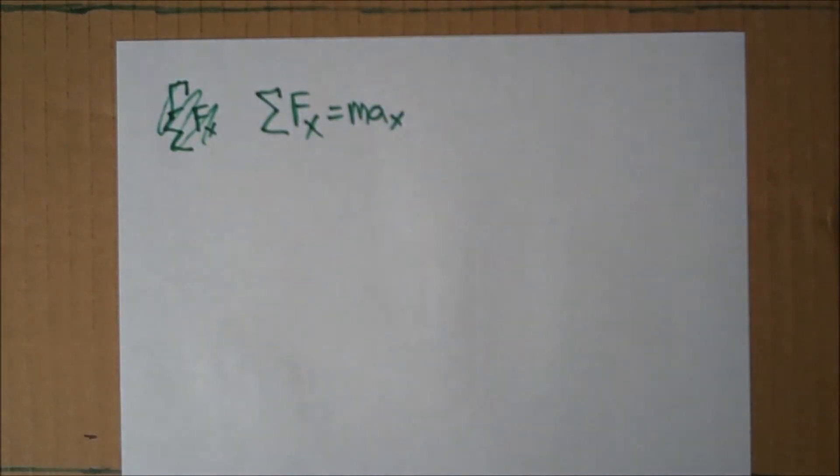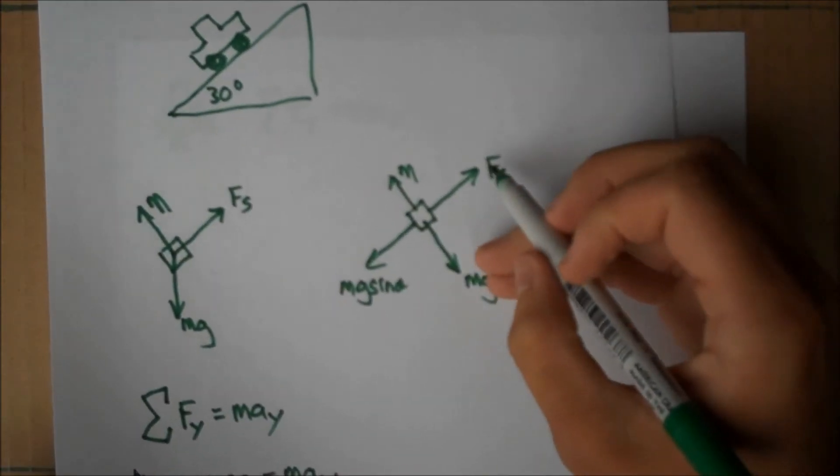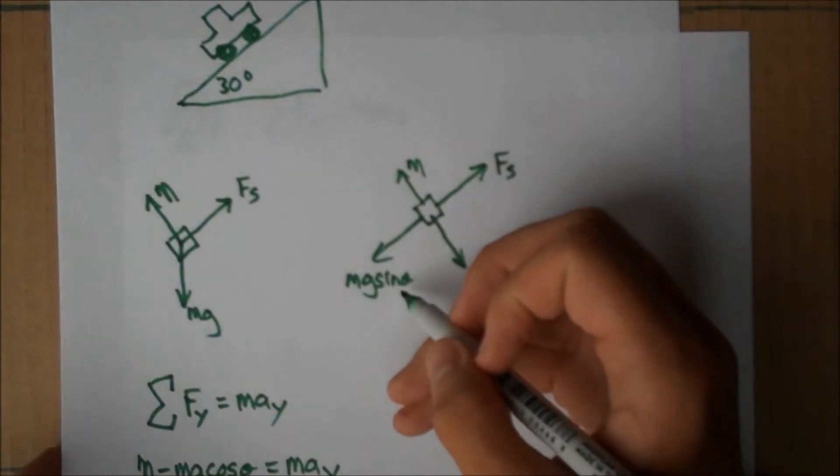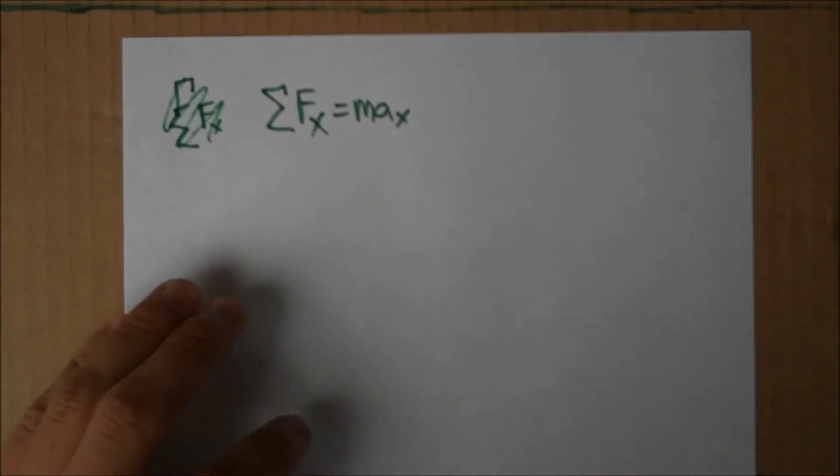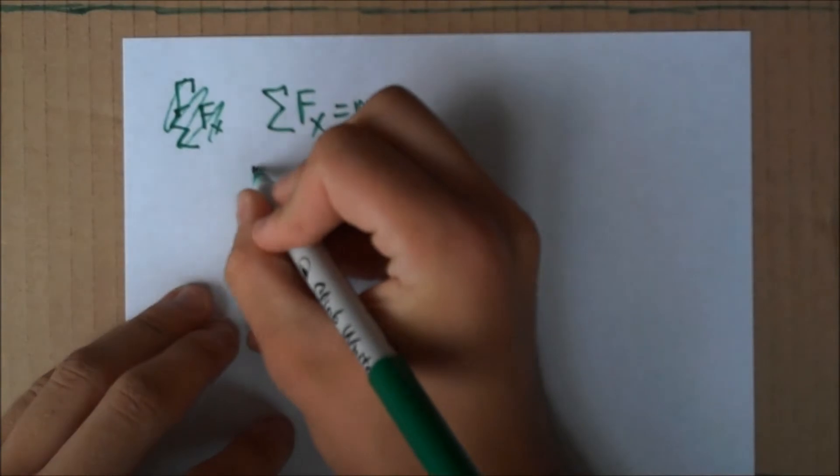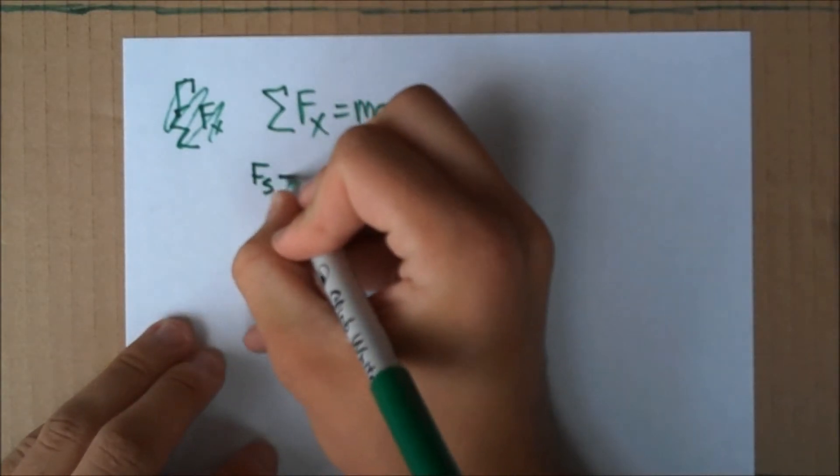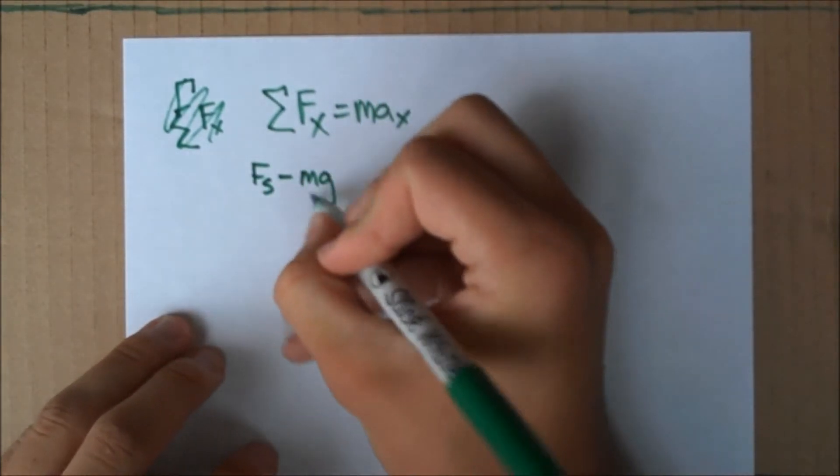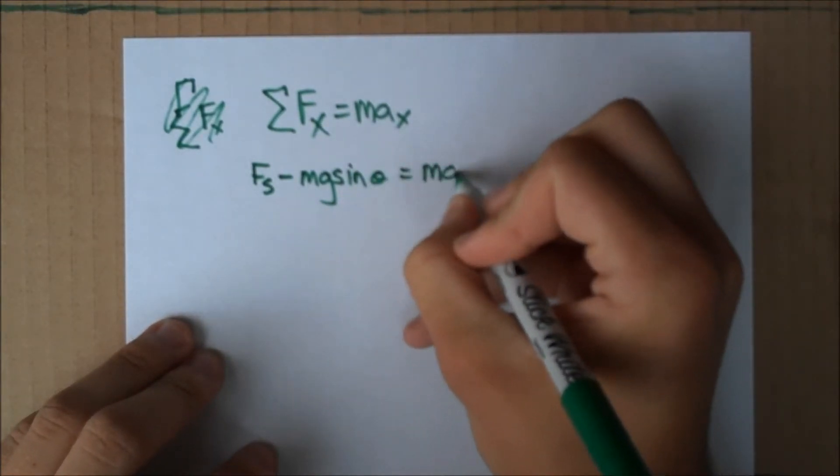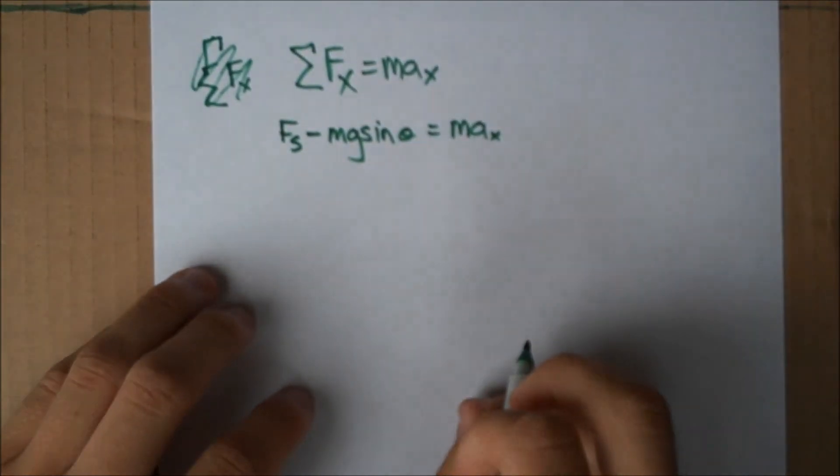If we look back to our coordinate axes, this time we'll see in the positive direction we'll have force of static, and in the negative direction we'll have Mg sine of theta. So we will write force of static minus Mg sine of theta equals mass times acceleration in the X direction.